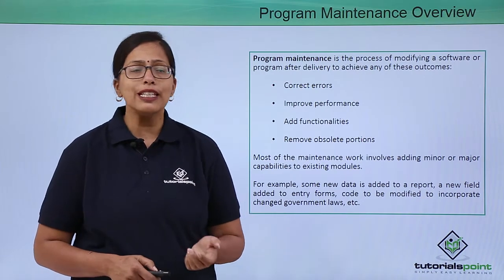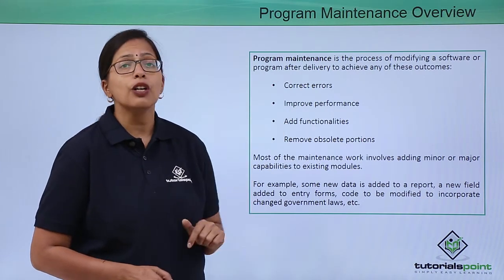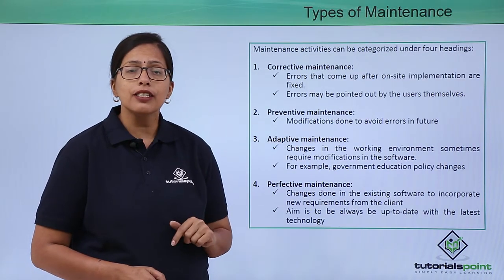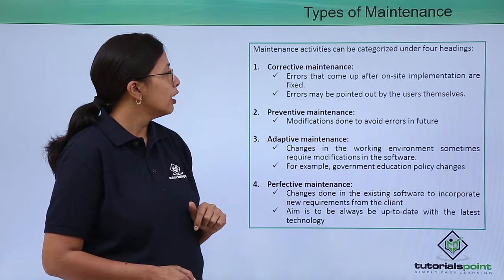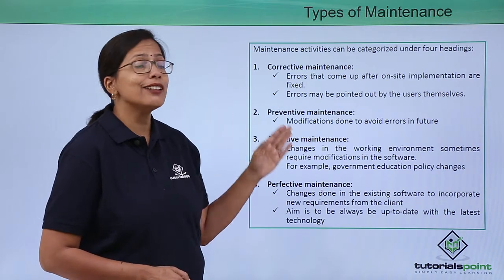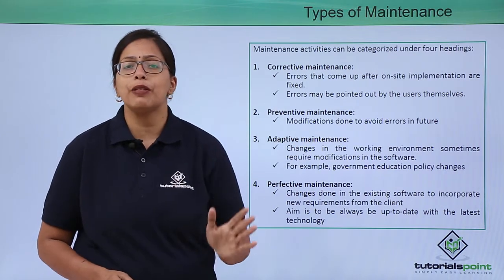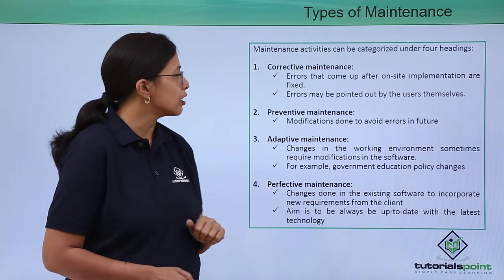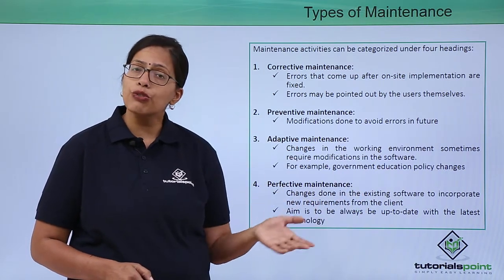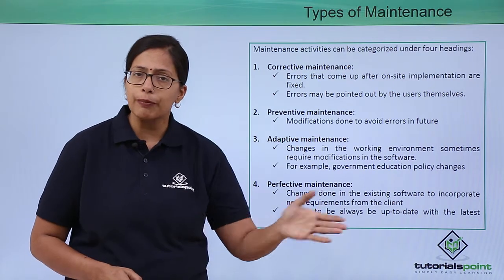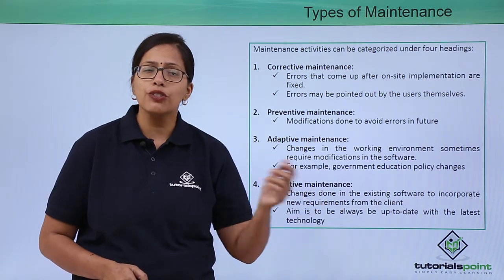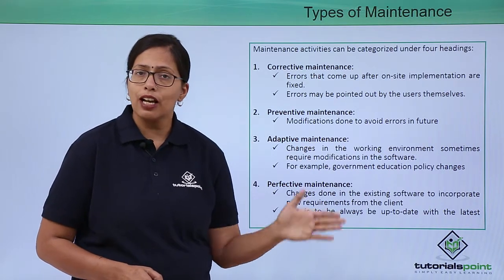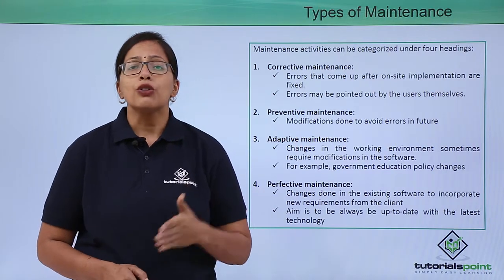Let's look at the different types of maintenance. Corrective maintenance involves correcting errors that come up after on-site implementation has been done. Errors may be pointed out by the users themselves, or the implementers find those errors during implementation. Preventive maintenance involves modifications done to avoid future problems, usually picked up from a list of known bugs.